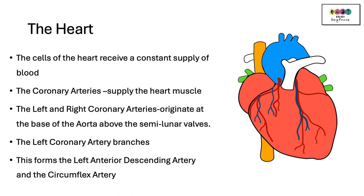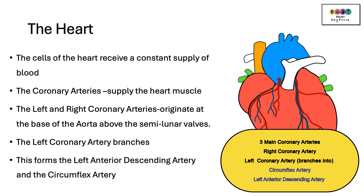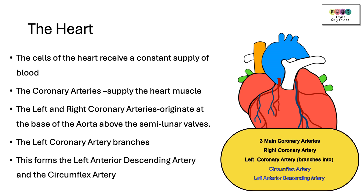The cells of the heart receive a constant supply of blood rich in oxygen and nutrients. The coronary arteries supply the heart muscles — that middle layer made up of cardiac muscle cells. The left and right coronary arteries originate at the base of the aorta, branching directly off just above the semilunar valves. The left coronary artery branches to form the left anterior descending artery, commonly known as the LAD, and the circumflex artery. In cardiology there are three main coronary arteries: the right coronary artery, and the left coronary artery which branches into the circumflex artery and the LAD. It's generally these arteries that get blocked if somebody has a heart attack.